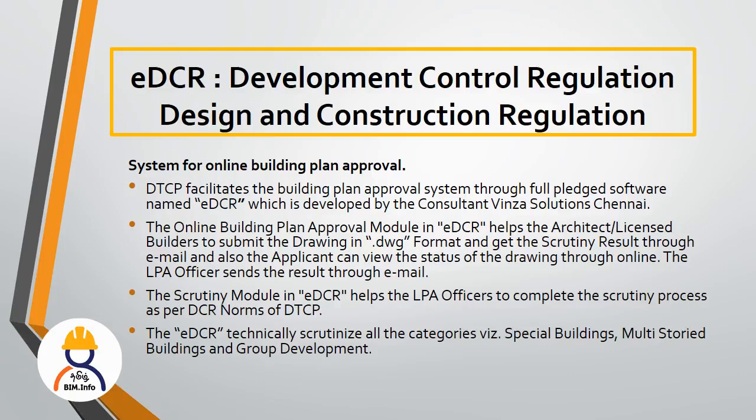You apply for DWG format and receive a reference number. You can check the plan submitted for approval. The plan goes to the local planning authority. They download and upload it to the EDCR software. You can check documents including the survey number, register number, plot number, and building register number.